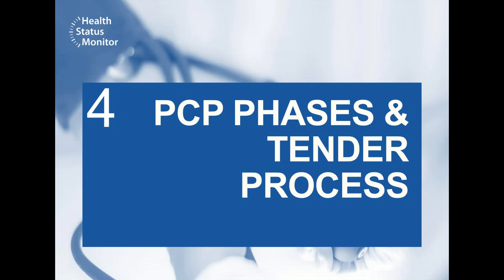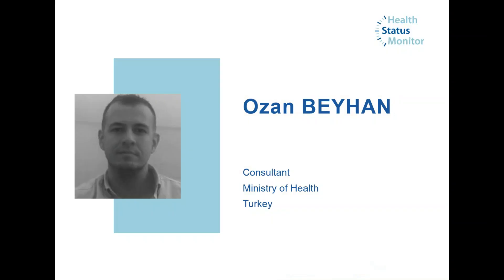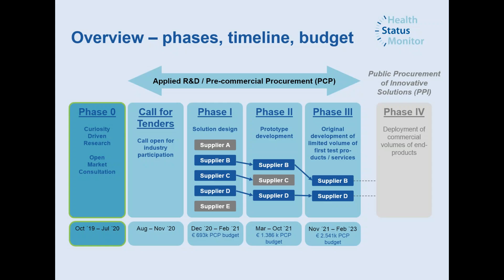We'll move on to more details about the tendering process. This time we have the indicated budgets for each phase and a clearer timeline for the project. After launching the tender in the summer and evaluating the offers in the fall, we are planning to start phase one in December and finish phase three in early 2023.